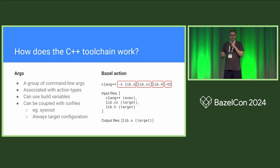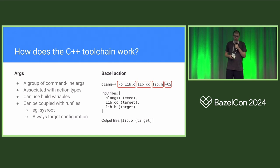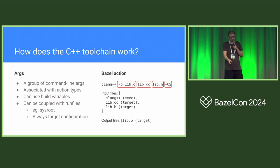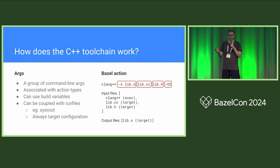Next we have args. Args are basically just arguments to be added to the command line, added in little groups. They're associated with action types — specific action types require specific args. For example, when you're compiling, you're going to need your input files. They can often use build variables — for example, lib.o is one of our build variables. And they can be coupled with run files: if you have the --sysroot arg, then you're going to need the sysroot to be provided for it to work, so we add the run file for the sysroot.